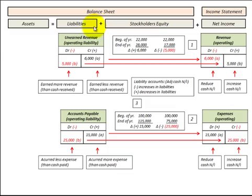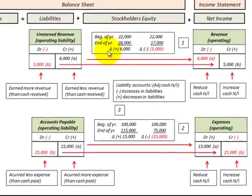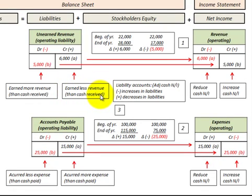Looking at unearned revenue as a liability: if there's an increase of $6,000 from the beginning to the end of the year, we credit unearned revenue for that amount — this means we earned less revenue than the cash we received. The debit entry reduces our revenue account by $6,000, which reduces net income, because we earned less revenue than the cash received.